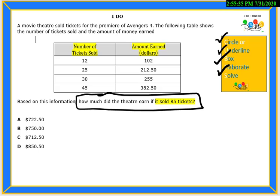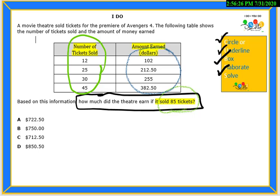Next we elaborate. Because we are working with a comparison of number of tickets sold to the amount earned, I will use green for tickets and blue for amount earned. Green for tickets: 12, 25, 30, 45, and 85 tickets. Blue for amount earned: $102, $212.50, $255, $382.50. And how much?